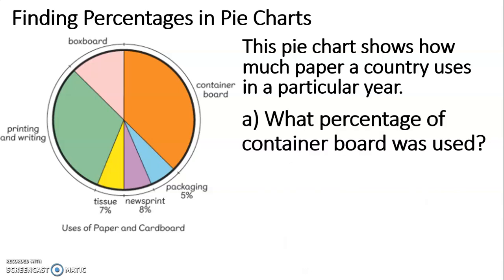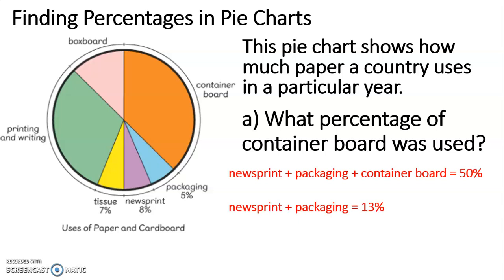Let's start by thinking about question A — the container board. If we look at the segment for container board, and next to it we have packaging and newsprint, those three segments together make up half of the pie chart, which is 50%. If we add together newsprint and packaging, we get 13%. 50% subtract the 13% of newsprint and packaging will give us the amount of container board — 37%. So 37% is container board.